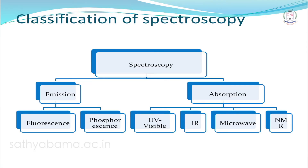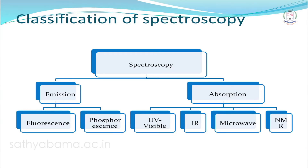Emission spectroscopy is further classified into fluorescence spectroscopy and phosphorescence spectroscopy depending on the light. Absorption spectroscopy, depending on the wavelength of light absorbed by the sample, is classified as UV-visible spectroscopy, IR spectroscopy, microwave spectroscopy, and NMR spectroscopy. In NMR spectroscopy, radio waves are frequently used.